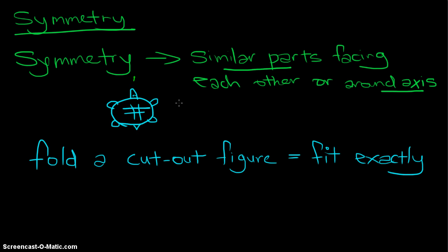But what if I decide to cut the other way — this way? Although I cut it perfectly into half, this is not symmetrical. Why? Because this part here has the head and this part here has the tail. So if I fold them to overlap, they do not form a similar part. That's why this is not a line of symmetry.